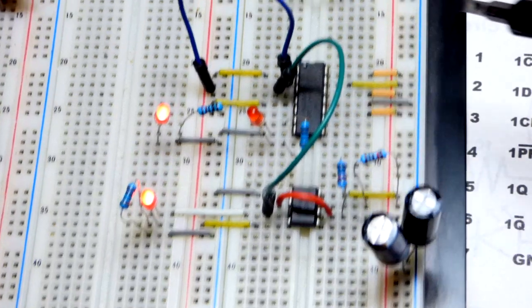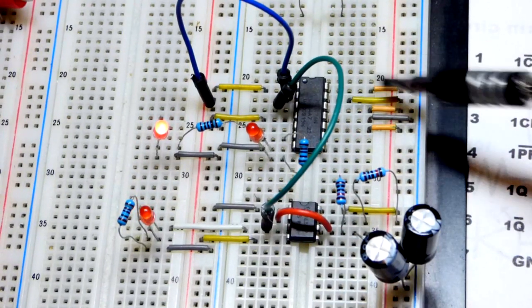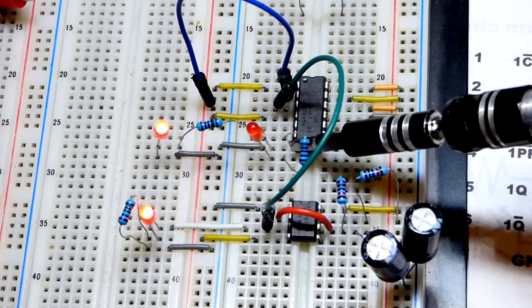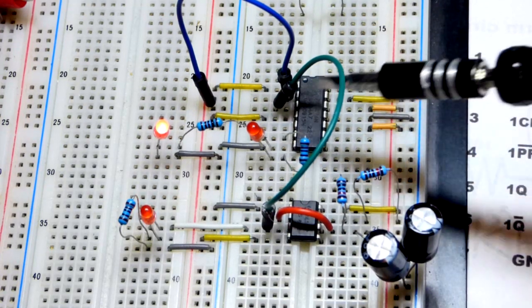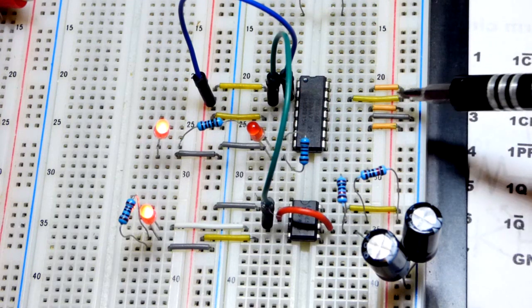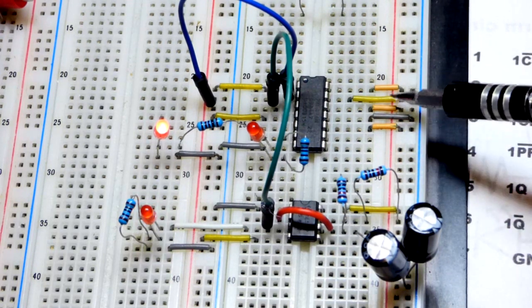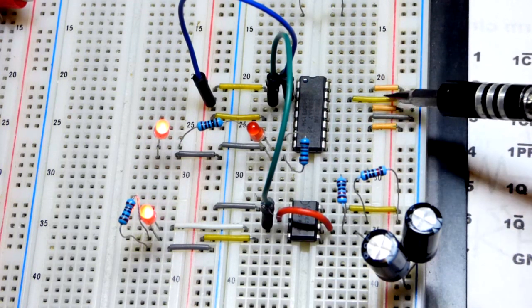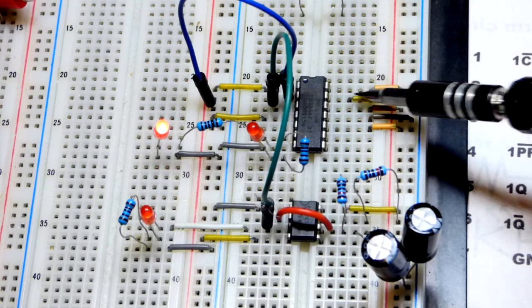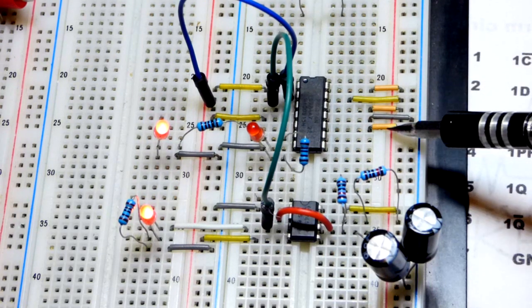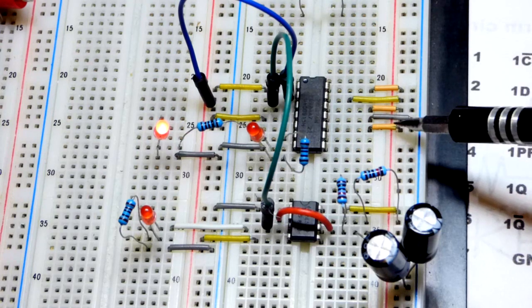So here you can see better. We have the integrated circuit powered - pin 14 to the positive supply, pin 7 down there to the negative supply. Here are the inputs that we are not using. We don't want to leave them floating. That's the clear and the preset right there, both waiting for a low input.